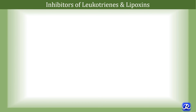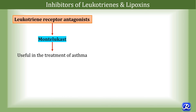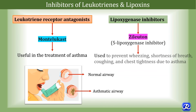Inhibitors of leukotrienes and lipoxins have therapeutic functions. The leukotriene receptor antagonist montelukast is used in the treatment of asthma. Lipoxygenase inhibitors like zileuton, a 5-lipoxygenase inhibitor, are used to prevent wheezing, shortness of breath, coughing and chest tightness due to asthma.